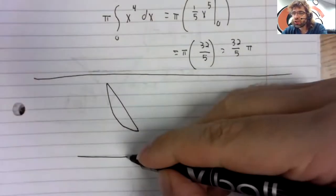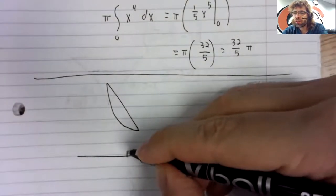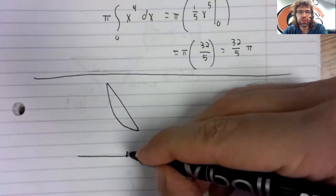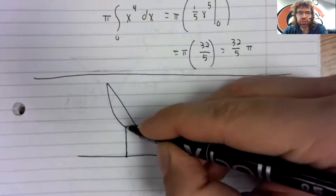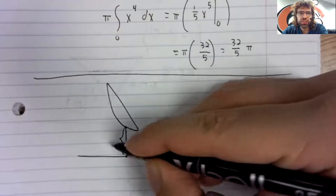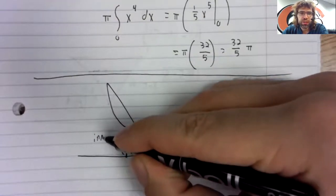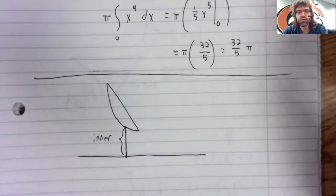You connect the curve to the line, the axis of rotation. You draw a line until you hit the region. That's your inner radius.